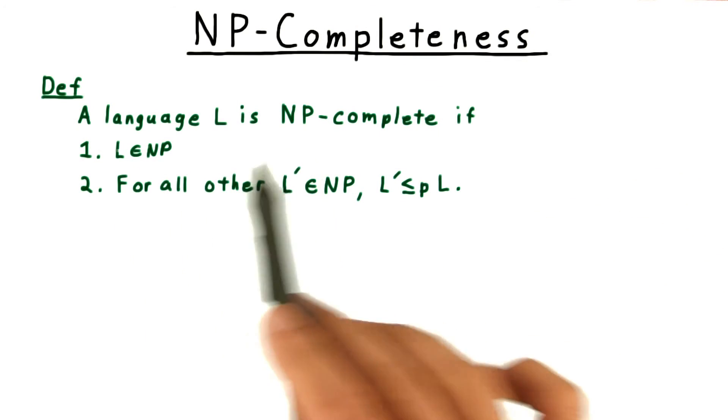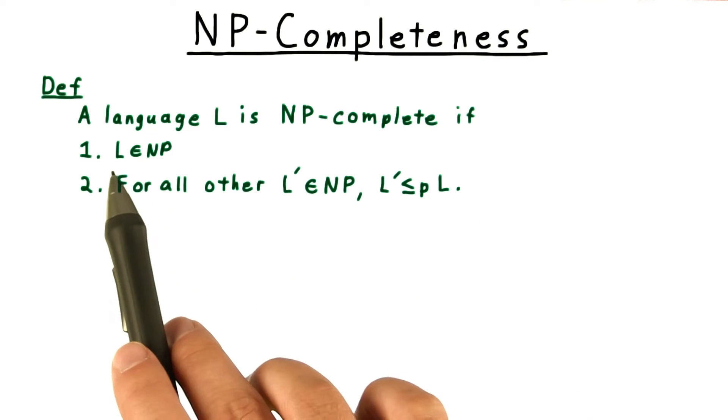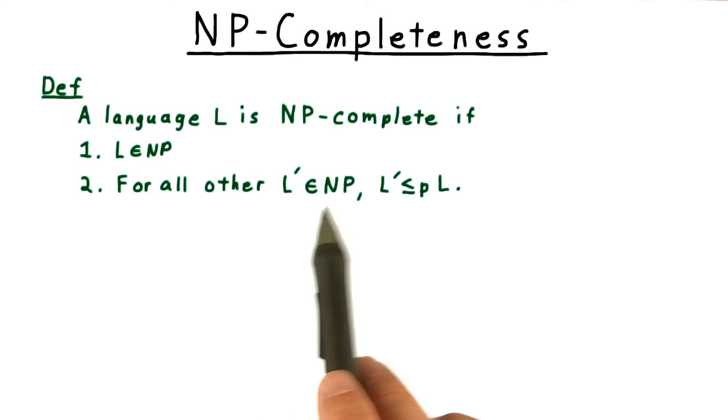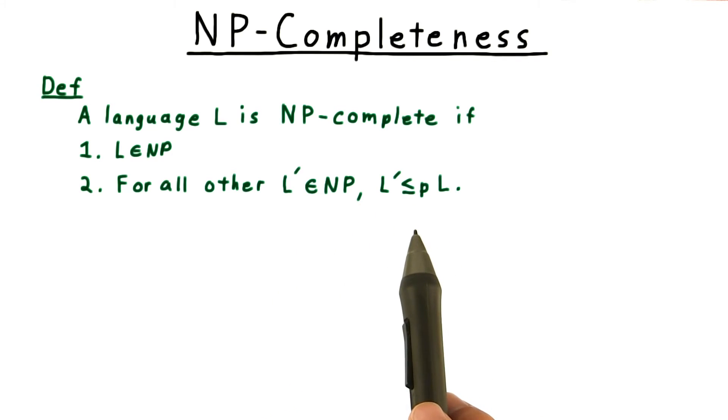Formally, we say that a language L is NP complete if L is in NP, and if every other language in NP can be reduced to it in polynomial time.